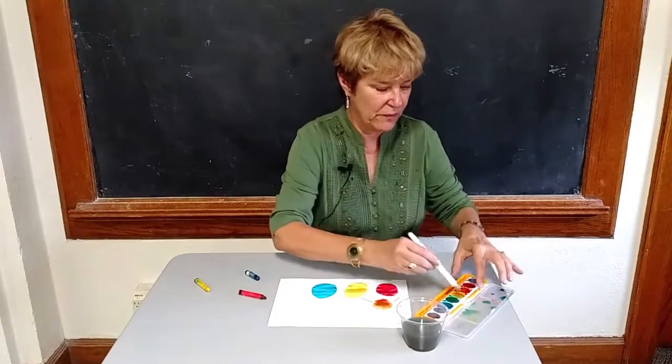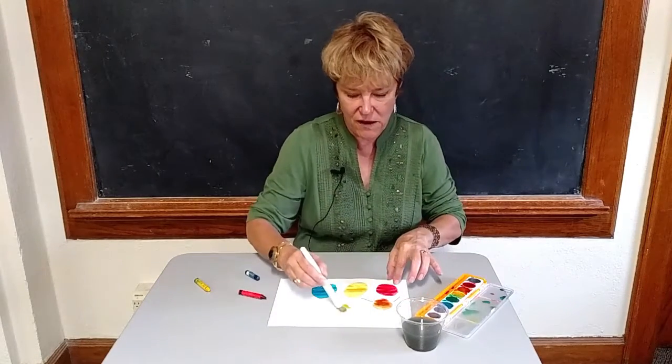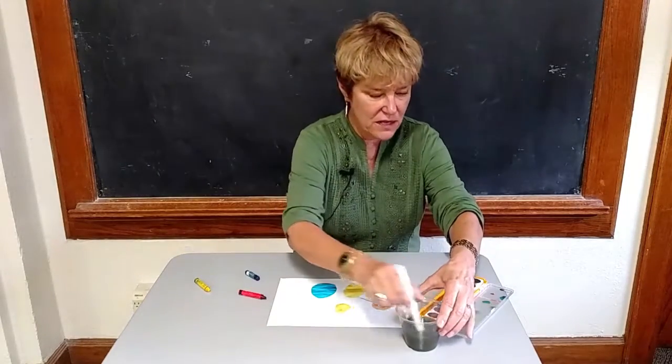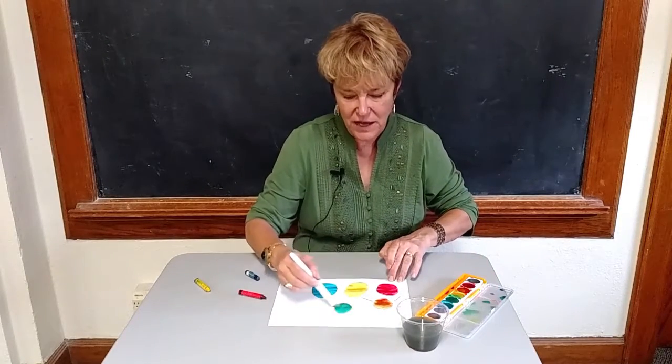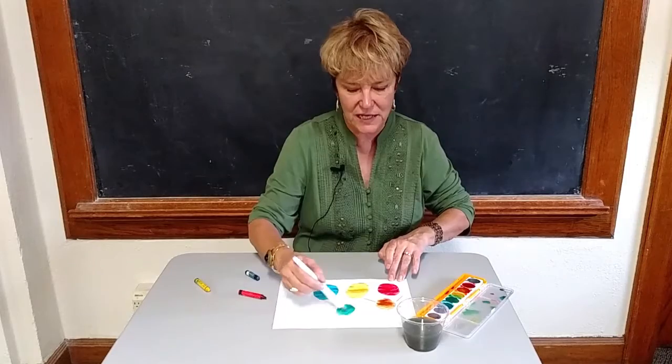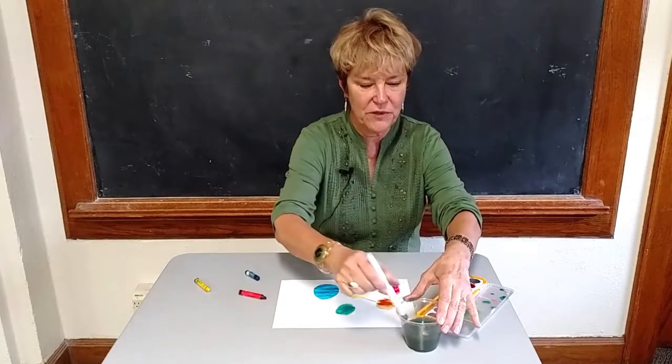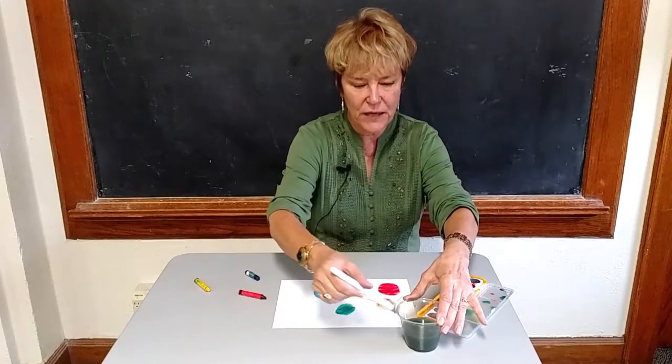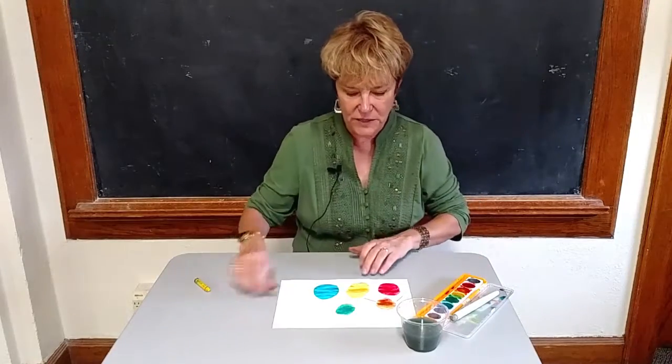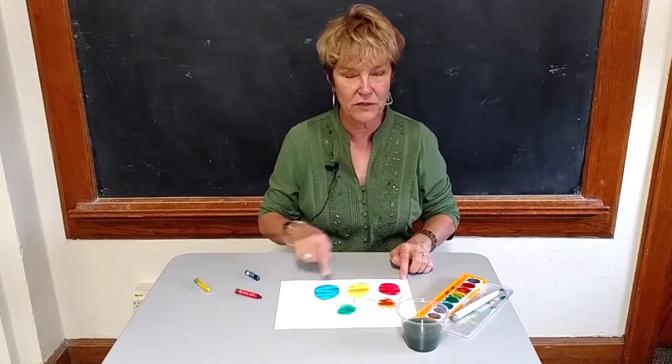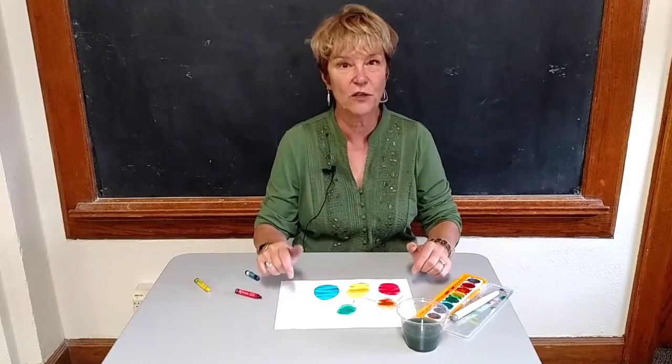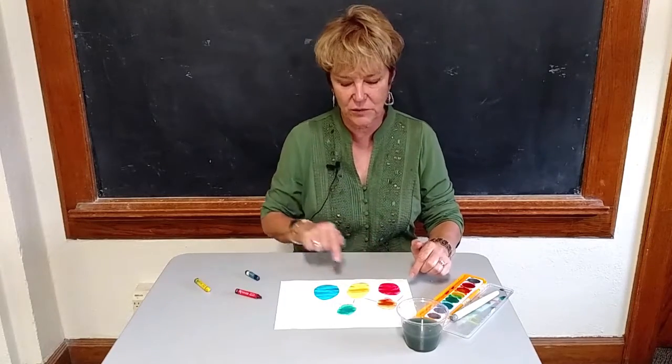Then you do the same with yellow and blue, and notice that it makes green. And then you do the same thing with red and blue to make purple. Always telling them, stressing that these are the primary colors and these are the secondary colors, and all colors come from these three things.